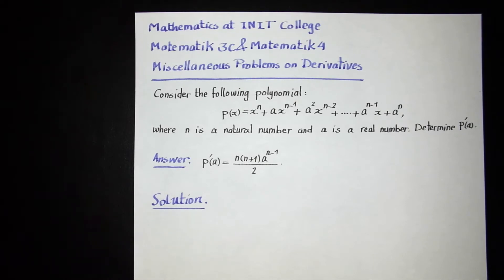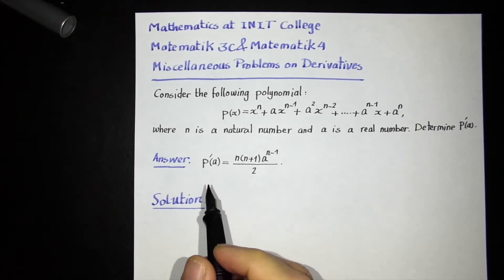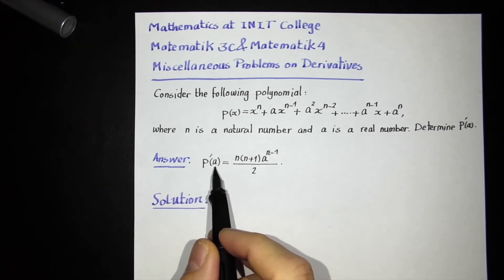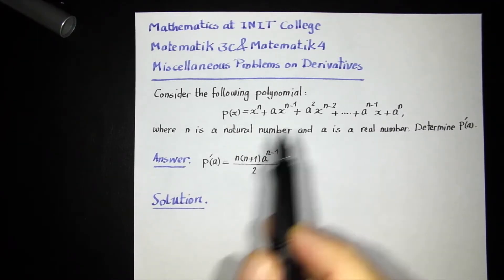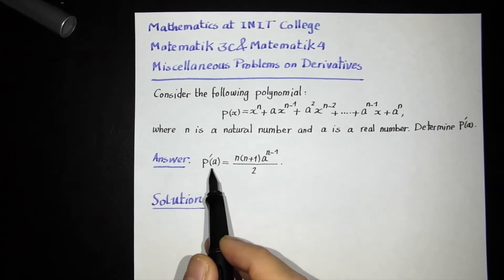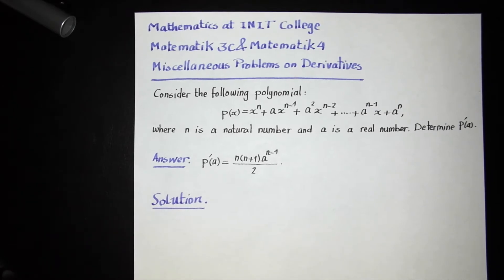Now let us start solving the problem. In this problem I am supposed to calculate the derivative of P at a given number a. To do this, I have to differentiate my polynomial first. When the differentiation is finished, I have to replace all x's in my derivative with the given number a, and then simplify the expression.